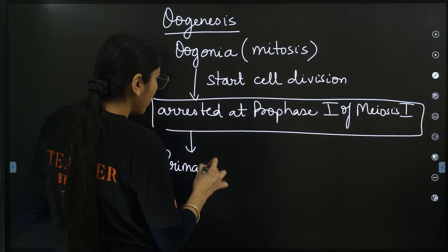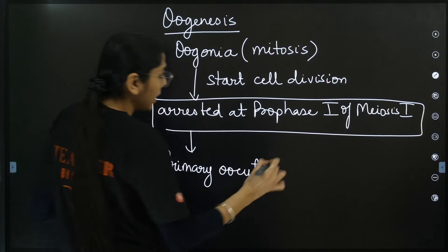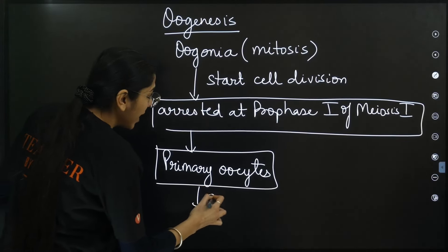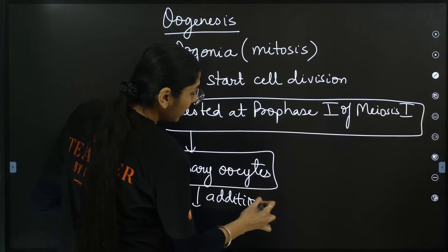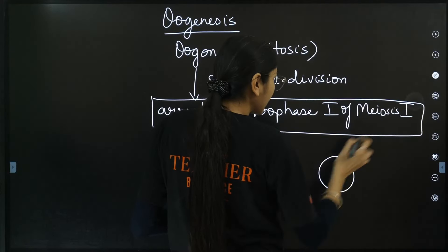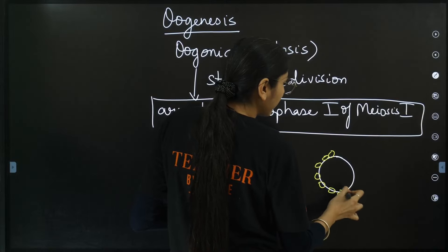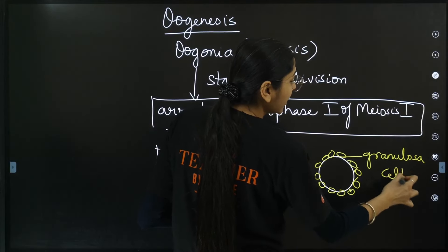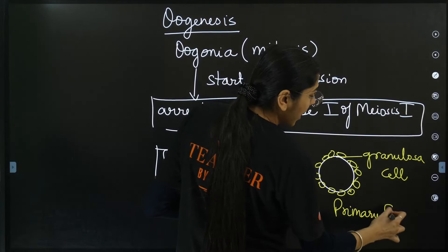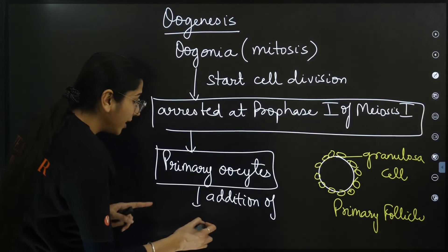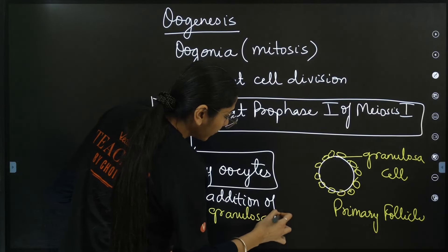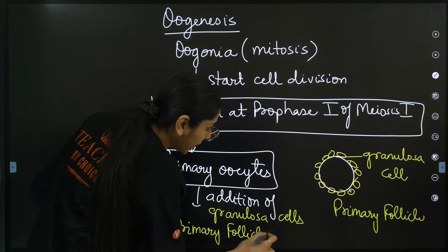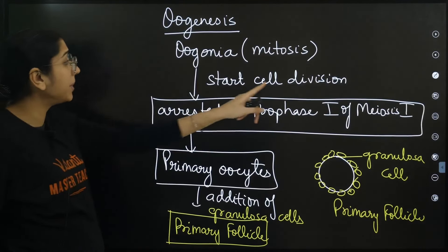These arrested cells are called primary oocytes. Granulosa cells are added around the primary oocytes, and this structure is called a primary follicle. Millions of primary follicles are formed, but large numbers degenerate as the process continues. By the time of puberty, only about 60,000 to 80,000 primary follicles are left with the female.